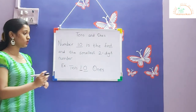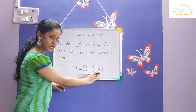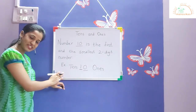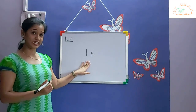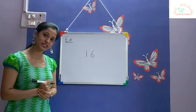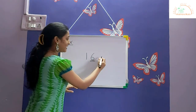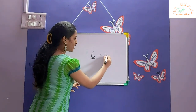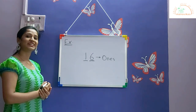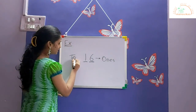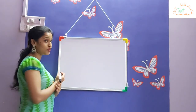The number on the right hand side is called ones, and the number on the left hand side is called tens. Let us take one more example — number sixteen. The number on the right hand side is ones, and the number on the left hand side is tens. Very good!